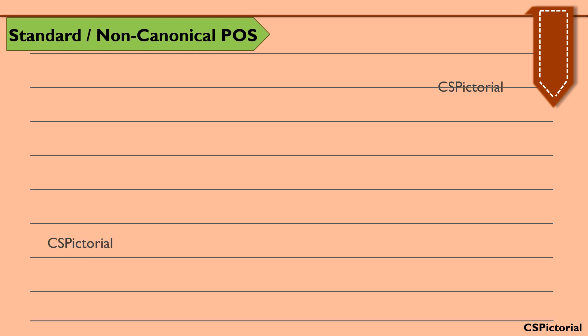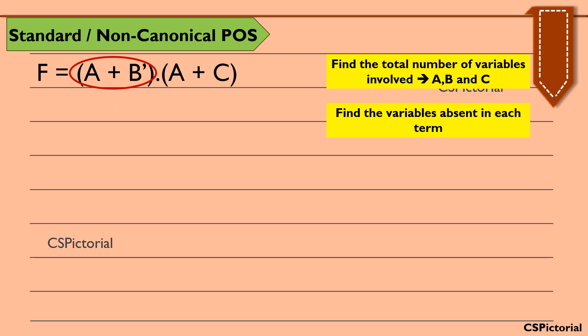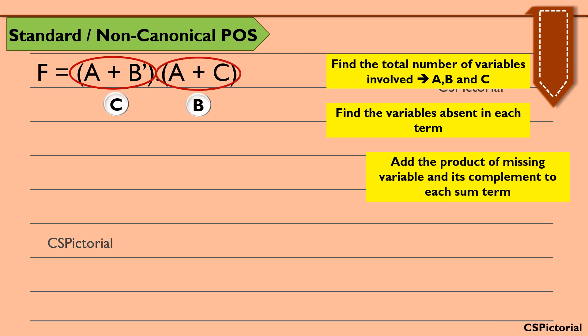This is a standard POS expression. As you all know, in a standard POS expression each sum term doesn't include all the literals. So first, find the total number of literals involved in the expression. Here, three literals are involved: a, b, and c. Now find the variables that are absent in each sum term. In the first sum term c is missing, and in the second sum term b is missing. Now add the product of the missing variable and its complement to each sum term. The expression is then written as (a plus b bar plus c into c bar) into (a plus b into b bar plus c).